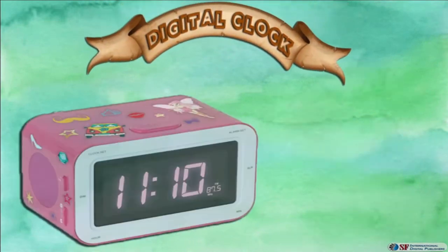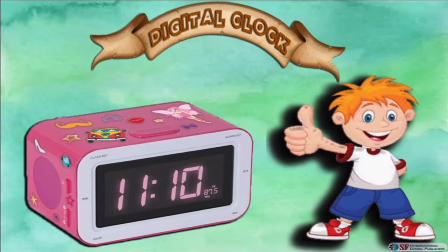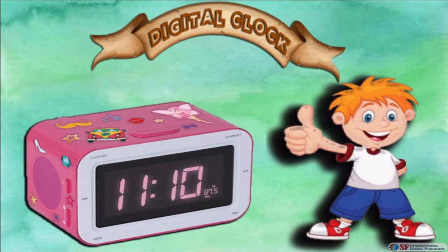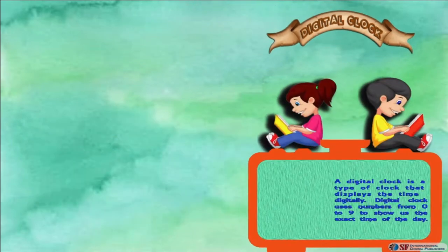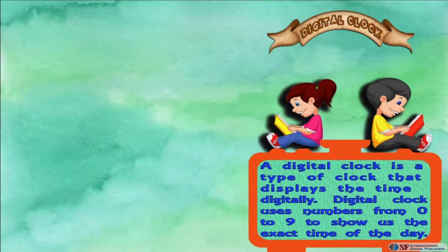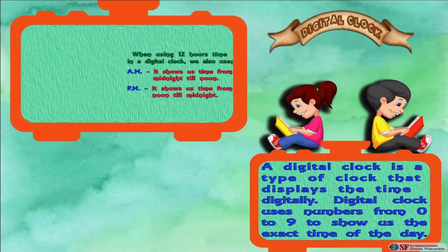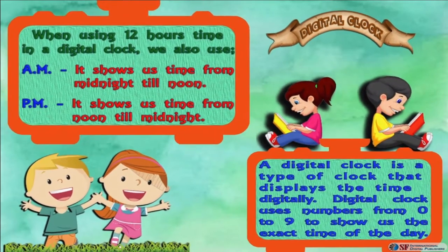In this section we will learn about a digital clock and how it works. A digital clock is a type of clock that displays the time digitally. A digital clock uses numbers from 0 to 9 to show us the exact time of the day.